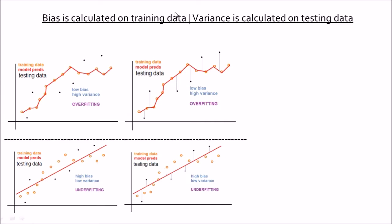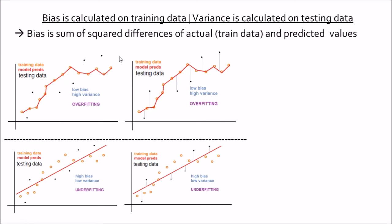Bias is calculated on the training data and variance is calculated on the testing data. Bias is the sum of squared differences of the actual training data and the predicted values. For example, these are my actual training data — the orange dots — and my predictions are the red-colored prediction line.